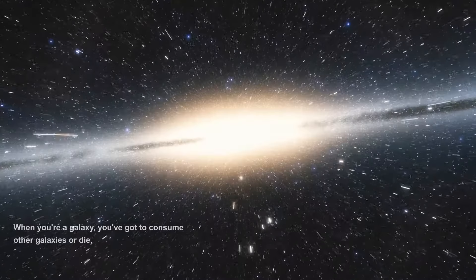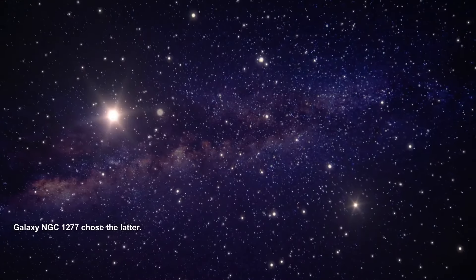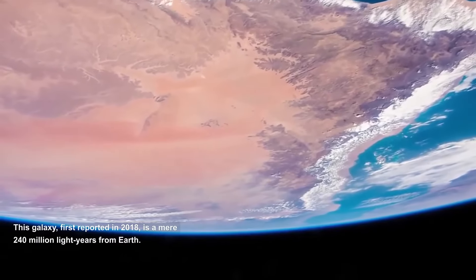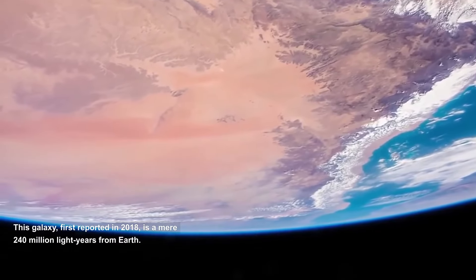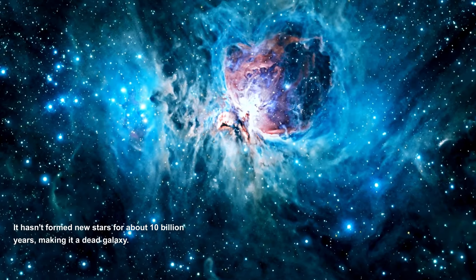Arrested Development. When you're a galaxy, you've got to consume other galaxies or die. Galaxy NGC 1277 chose the latter. This galaxy, first reported in 2018, is a mere 240 million light years from Earth. It hasn't formed new stars for about 10 billion years, making it a dead galaxy.